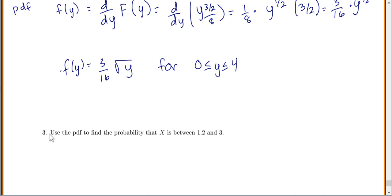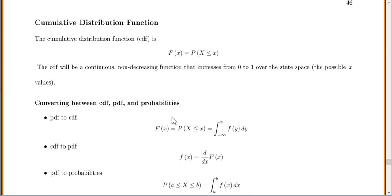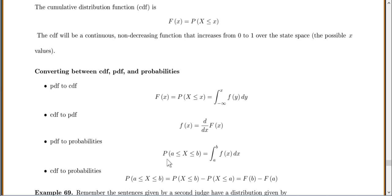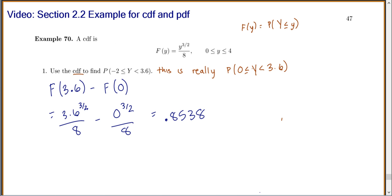And number 3, use the PDF to find the probability of x. Oh, we're not dealing with x's, we're dealing with y. Let's change that. It's between 1.2 and 3. So if you want to find the PDF to find probabilities, let's go back and look at our previous page for those formulas. So PDF to probabilities, you have to integrate. So if you want the probability between a and b, you integrate with the bounds of a and b. Let's go back.